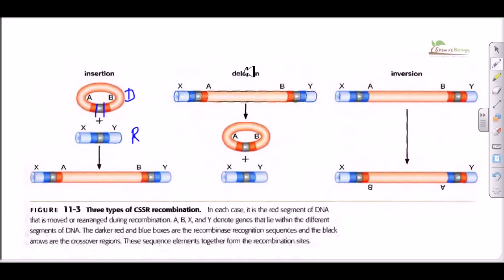If we look at the second process which is called deletion, as the name suggests we will delete some part of the gene. Suppose this is a longer gene and we do not need the genes A and B. We need to get rid of these genes.